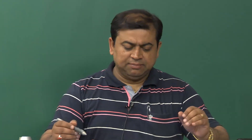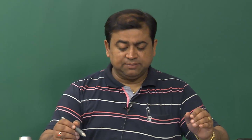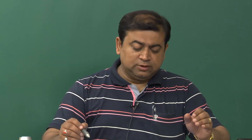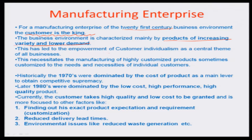The enterprise must map demand on a realistic basis and be able to make supplies of whatever is being demanded. This has led to the empowerment of customer individualism, which is nowadays a central theme of all businesses. Looking at the history of how organizations grew, the 70s were dominated mainly by product cost — the lower the cost, the better the saleability.